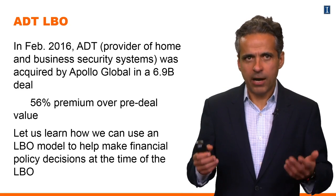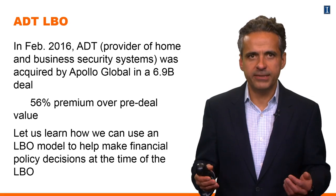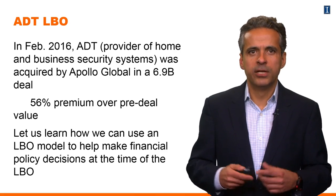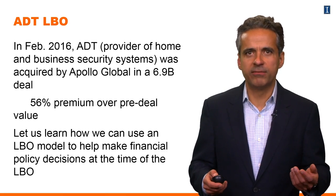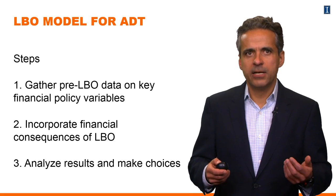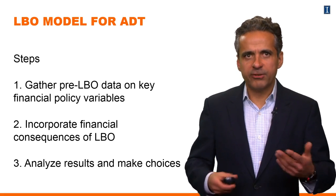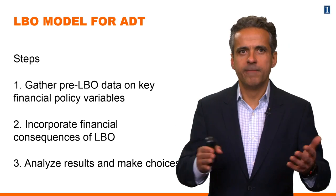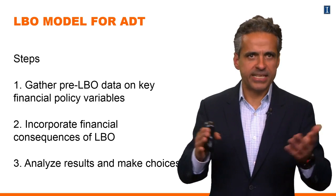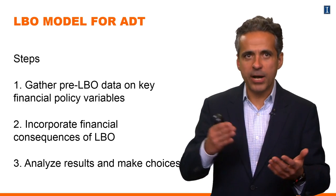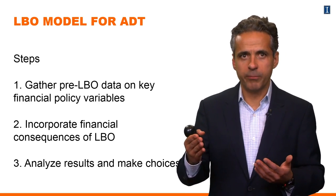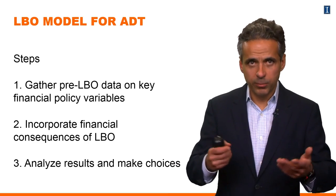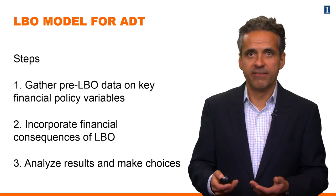What we're going to do now is talk about financial policy — specifically, how we can use a leveraged buyout model to help make financial policy decisions at the time of the LBO. The steps of a leveraged buyout model are typically three: you start by gathering pre-LBO data on key financial policy variables, then incorporate the financial consequences of the LBO, and analyze the results. This is going to allow us to make better-informed financial decisions.